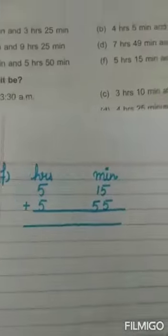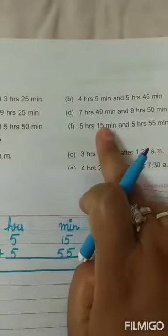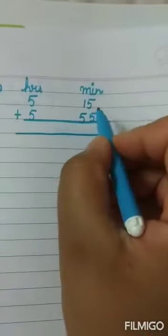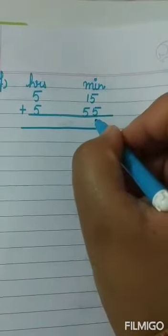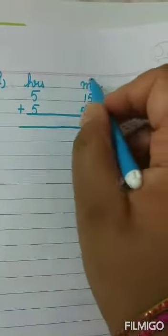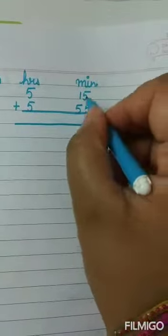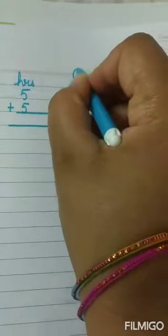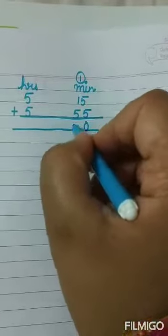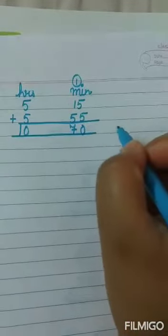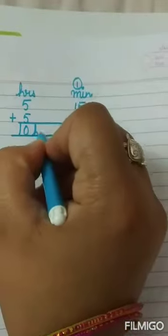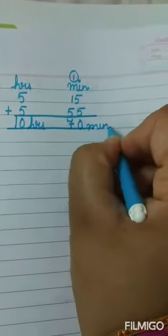Now F part is 5 hours 15 minutes and 5 hours 55 minutes. Minutes और minutes को plus करना है: 5 plus 5 is 10, write 0, 1 carry over. 5 plus 1 is 6, plus 1 is 7. Hours: 5 plus 5 is 10. आगे हमारे पास 10 hours हैं और 70 minutes हैं।